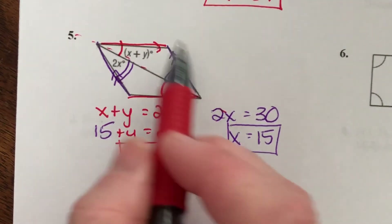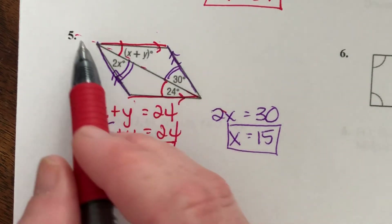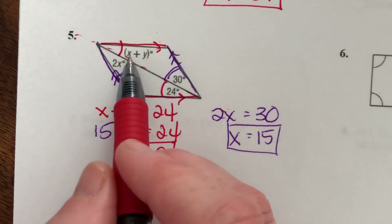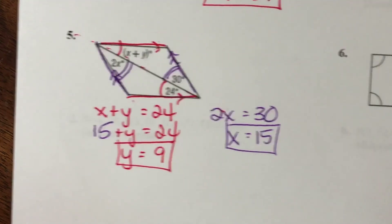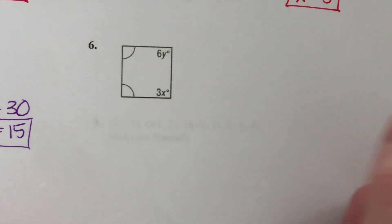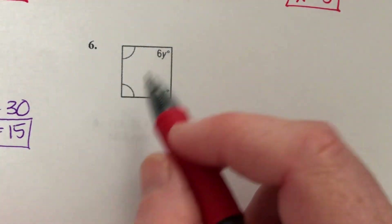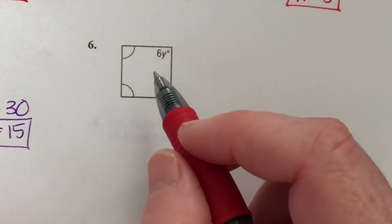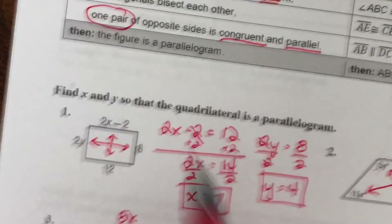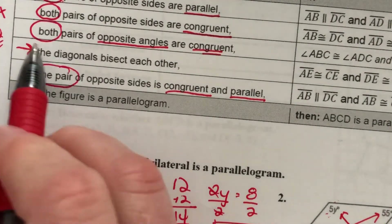For this to be a parallelogram, both pairs of opposite sides have to be parallel, and when parallel lines are cut by a transversal, alternate interior angles are congruent. Example 6: both pairs of opposite angles have to be congruent. The diagonals indicate congruent opposite angles.